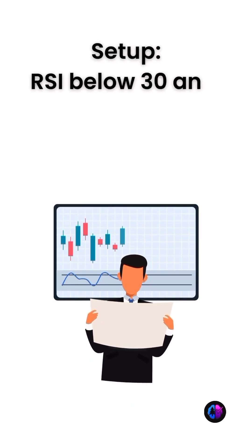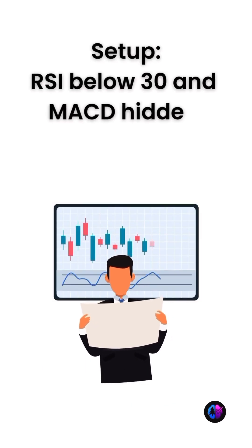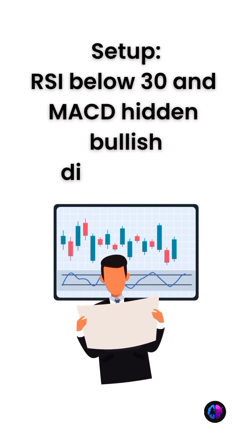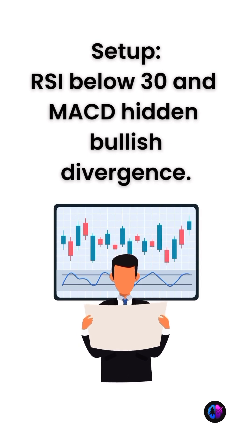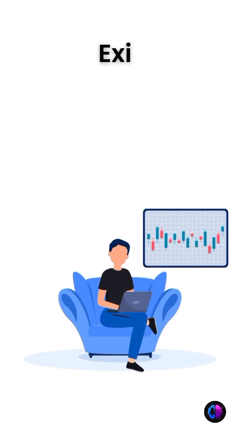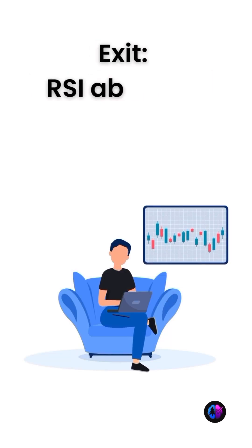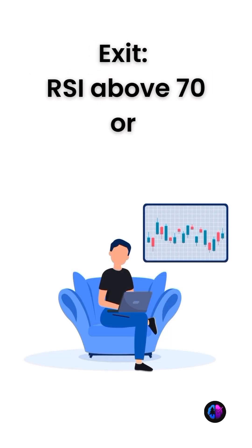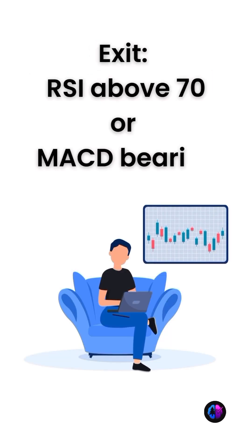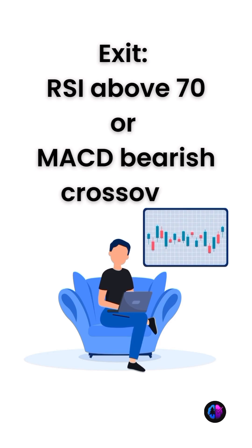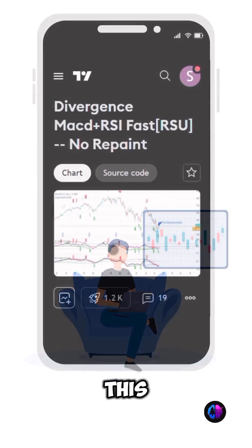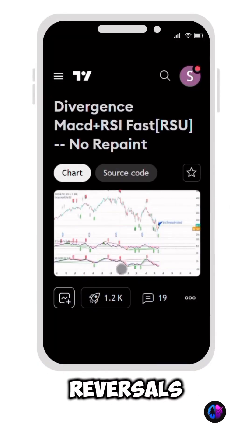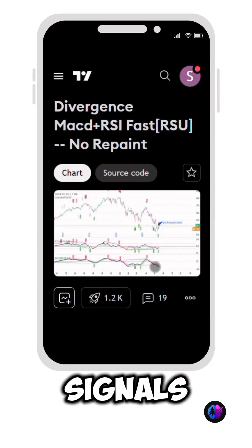The entry condition is RSI below 30 with a MACD hidden bullish divergence. The exit is triggered by RSI above 70 or a MACD bearish crossover. This approach catches reversals early while avoiding false signals.